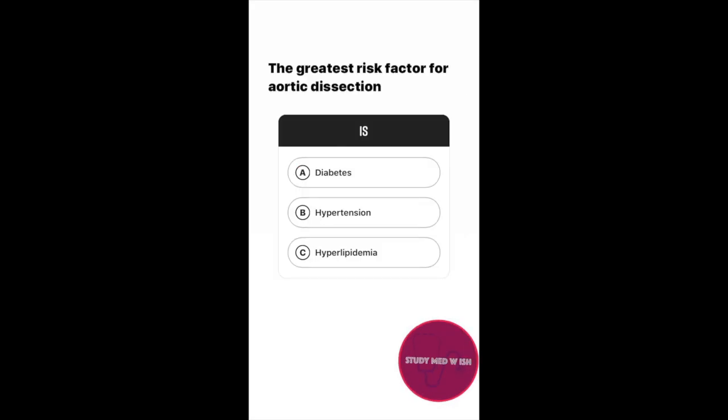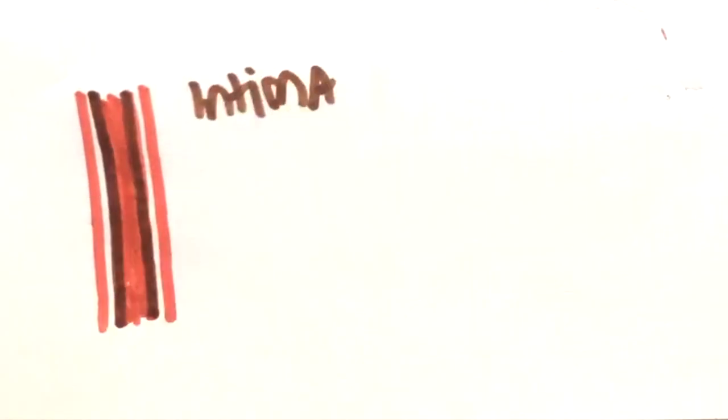Question number three. The greatest risk factor for aortic dissection is option A diabetes, option B hypertension, option C hyperlipidemia. The answer to this question is hypertension. When the blood flows at a very high pressure, it has the potential to tear this layer of the aorta.